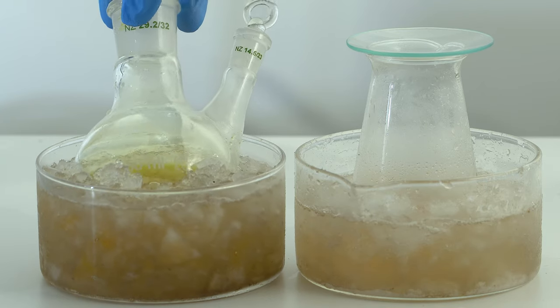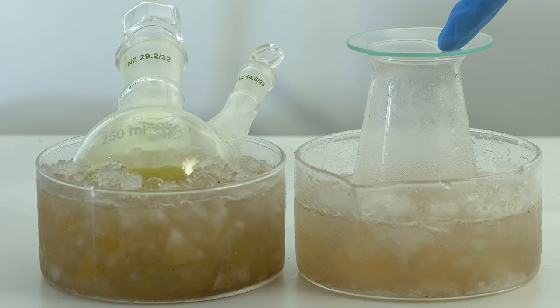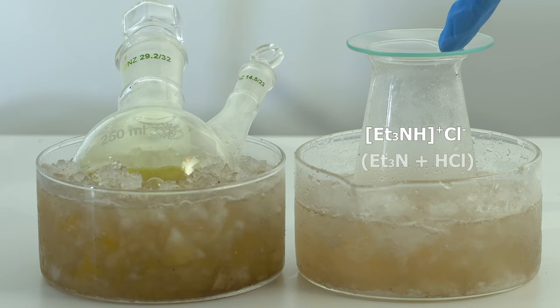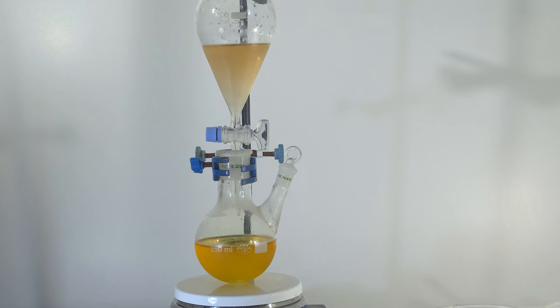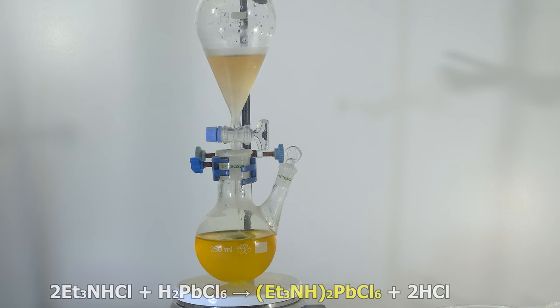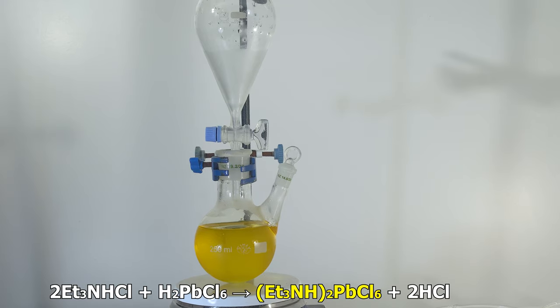Next step is cooling down the produced chloroplumbic acid and triphenylamine solution in hydrochloric acid. Then we mix cooled down triphenylamine chloride solution and chloroplumbic acid, which makes the color change to lemon yellow due to the formation of triphenylamine hexachloroplumbate.